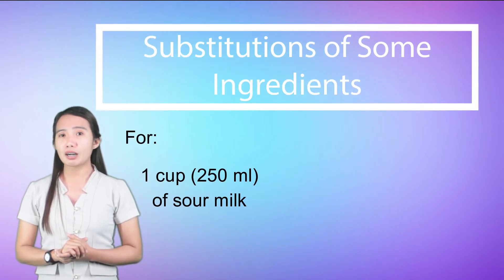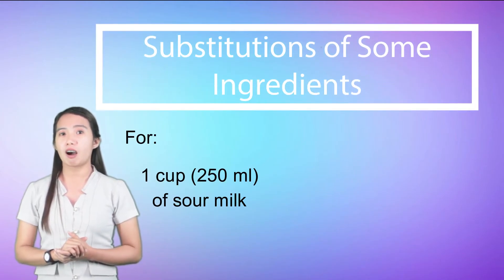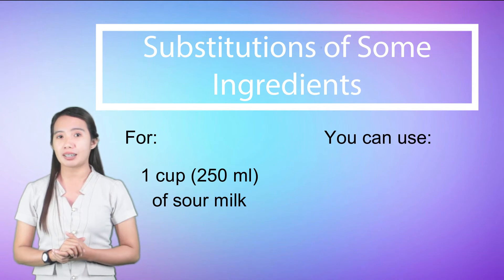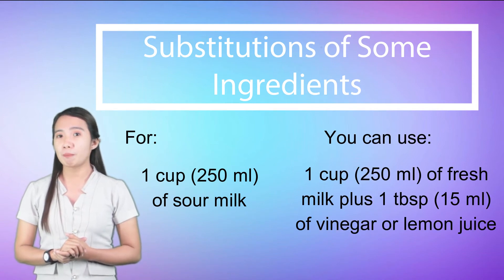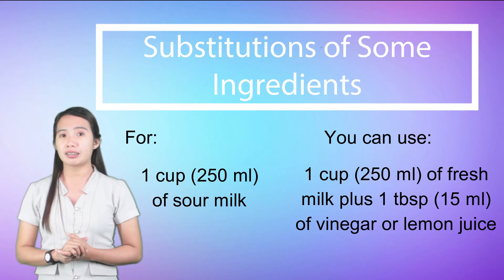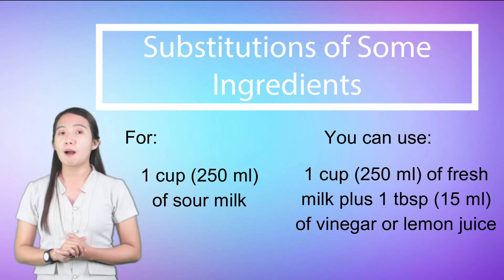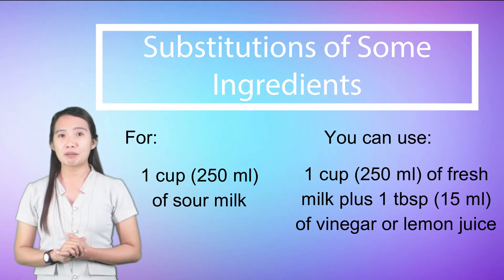For 1 cup or 250 milliliters of sour milk, you can use 1 cup or 250 milliliters of fresh milk plus 1 tablespoon or 15 milliliters of vinegar or lemon juice.